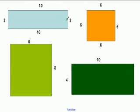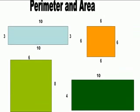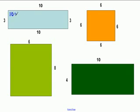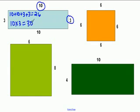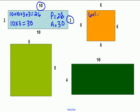What if we have no blocks inside to count? To find the perimeter, add up all the sides: ten plus ten plus three plus three. Ten plus ten is twenty, plus three is twenty-three, plus three is twenty-six. To find the area, multiply length times width: ten times three is thirty. So perimeter is twenty-six and area is thirty. For the next shape with all equal sides of six: six plus six plus six plus six equals twenty-four. Area is six times four, which is twenty-four.